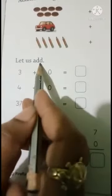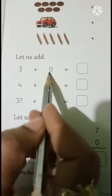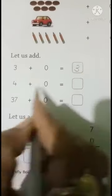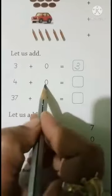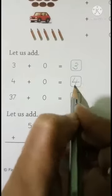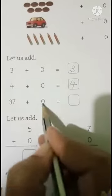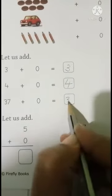Let us add. 3 plus 0 equals 3. 4 plus 0 equals 4. 37 plus 0 equals 37.